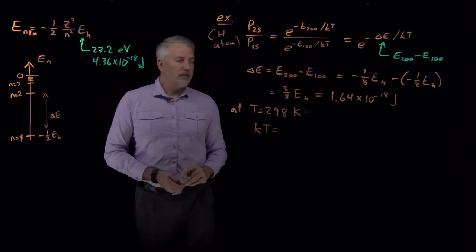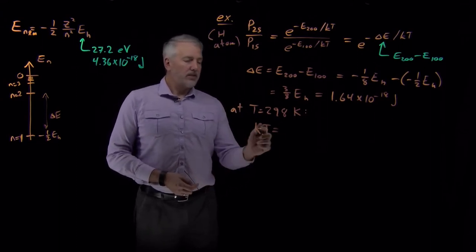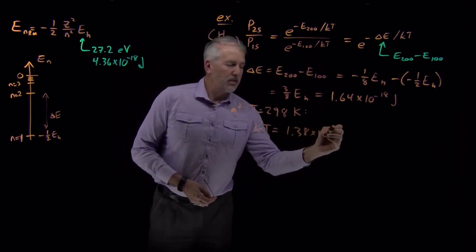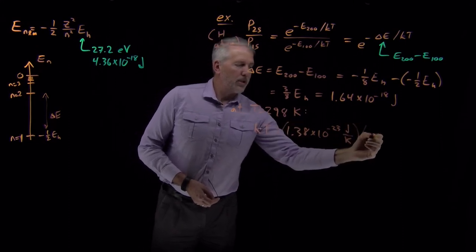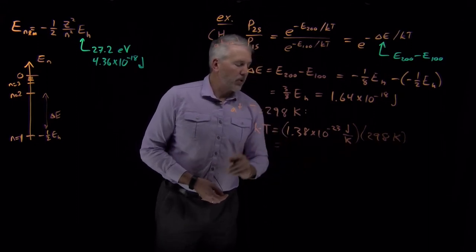So the value of kT, as our benchmark for energies, is Boltzmann's constant multiplied by the temperature we're interested in.